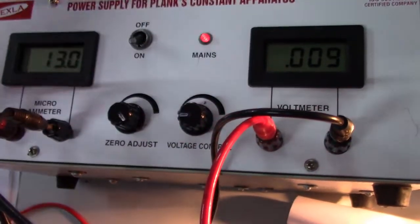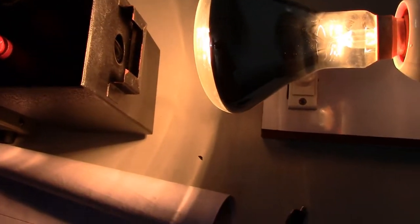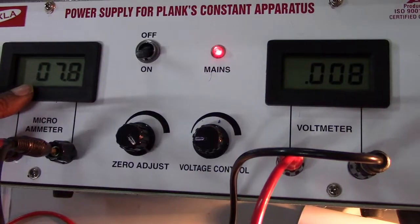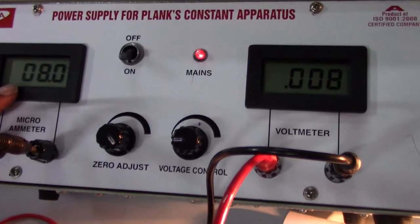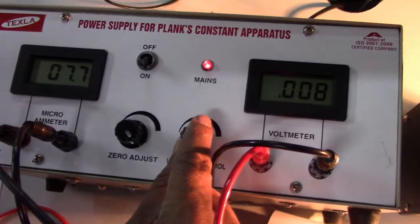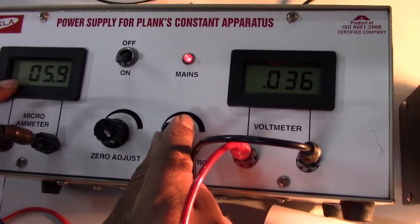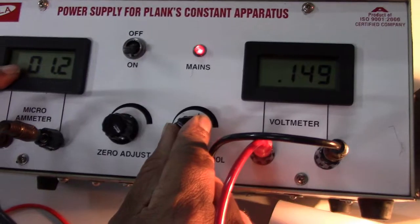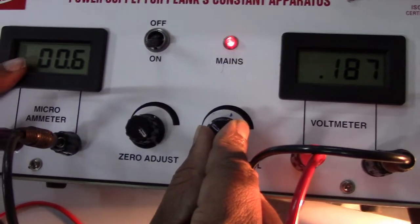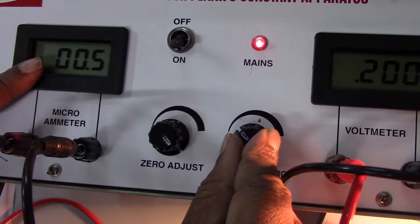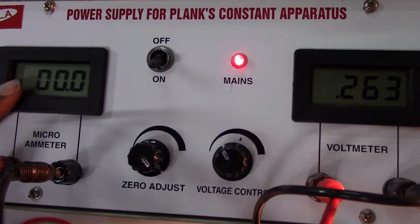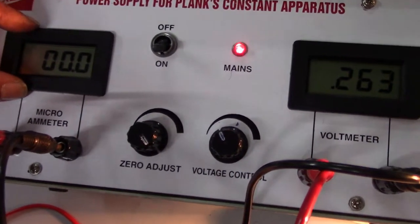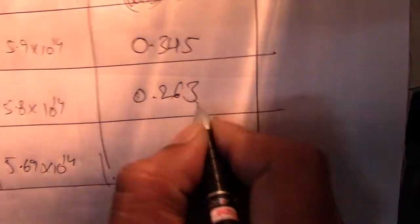Immediately bring the voltage back to zero, then replace the green filter with the orange filter. This is the current corresponding to orange light. Now increase the reverse voltage to find the stopping potential for orange color. The current decreases as the voltage increases; at 0.263 volts the current reaches zero. So the stopping potential for orange color is 0.263 volts.